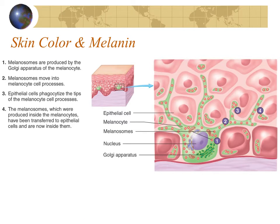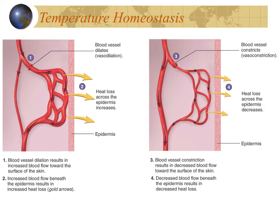We talked a lot about the role of skin in skin color and protection against ultraviolet light. The cells that produce the pigment melanin are called melanocytes; they produce it in the stratum basale, the basement layer of the epidermis. They then transfer it to other cells — the keratinocytes — through little melanosomes, small vesicles that contain melanin, so the color becomes spread throughout all cells but is made only by the melanocytes.